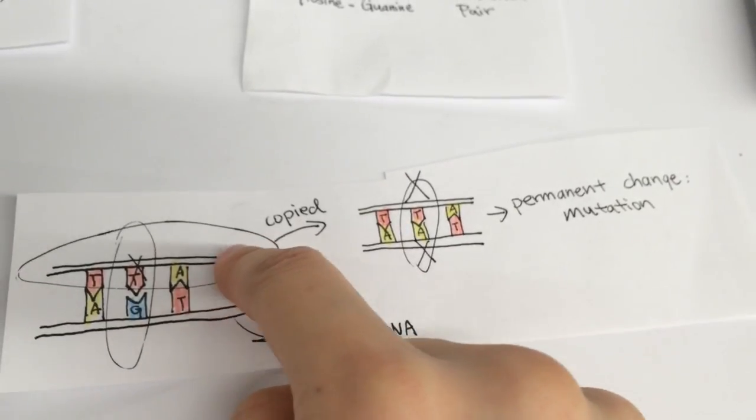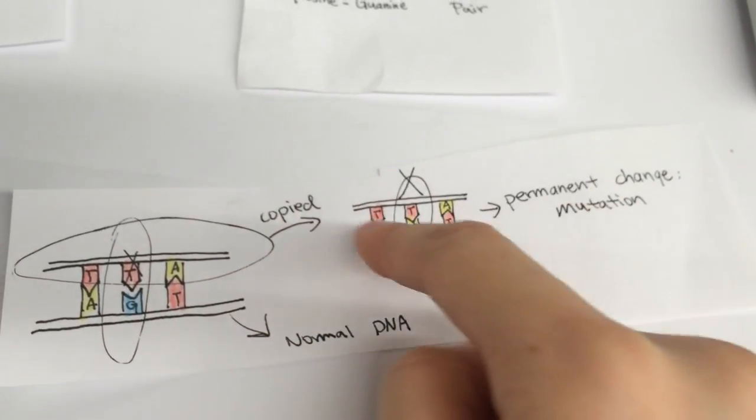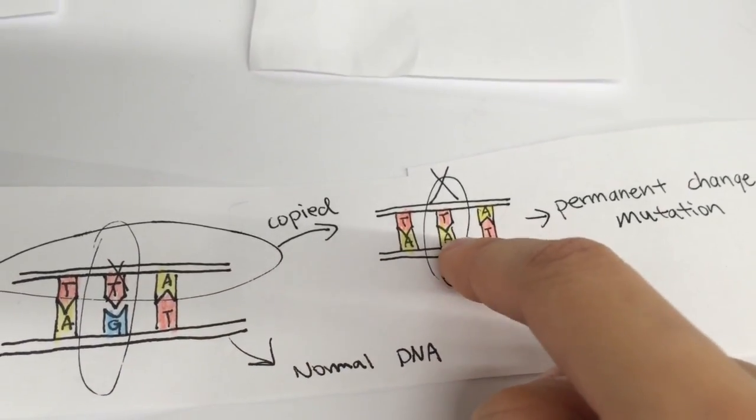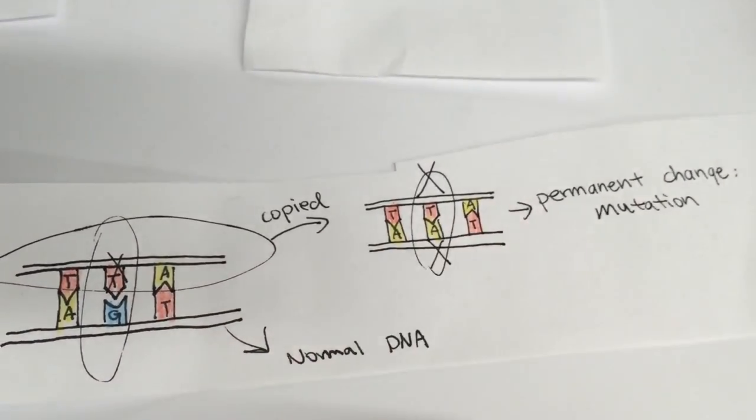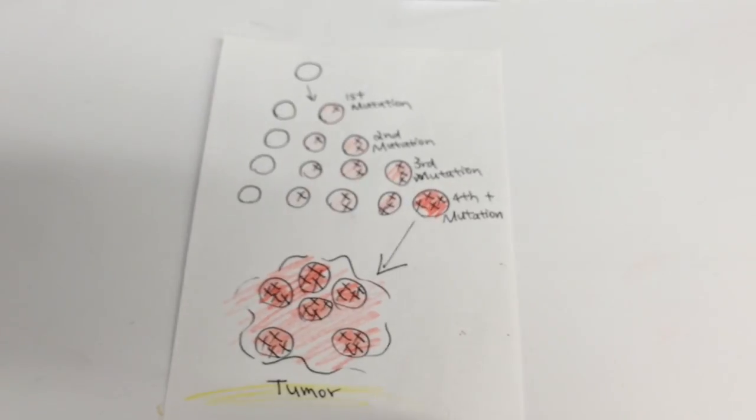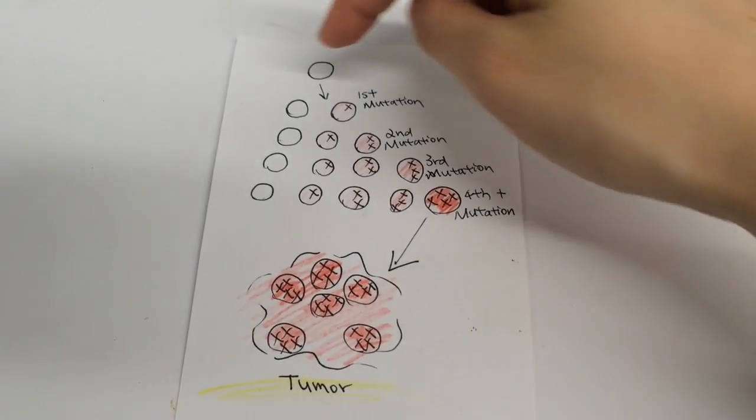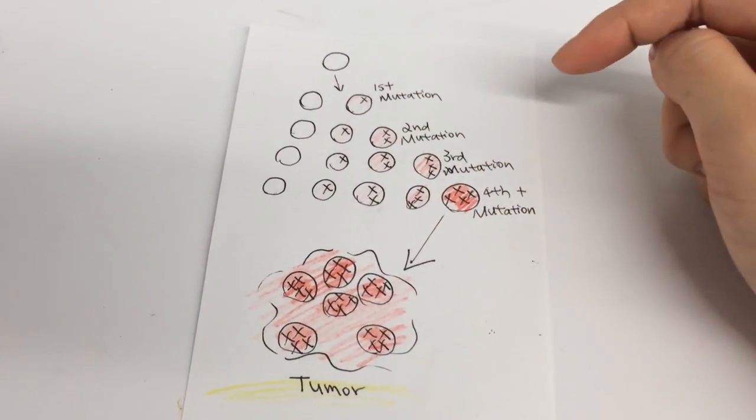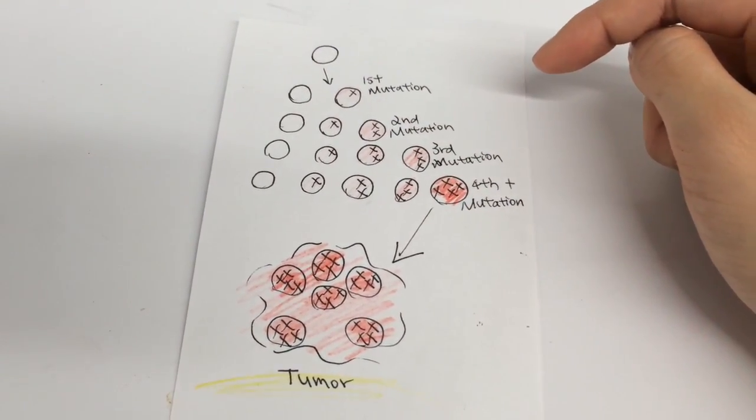When the cell replicates, the mistake is no longer a detectable mismatch of the bases, but becomes an actual mutation. The more mutated cells there are, the higher the chance that one of them will get another mutation. The cells with the mutations are called the precancerous cells because the mutations are not yet cancer-causing, but make the person more prone to getting cancer.